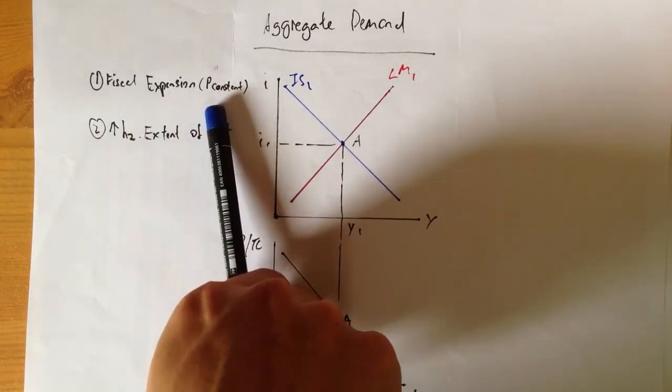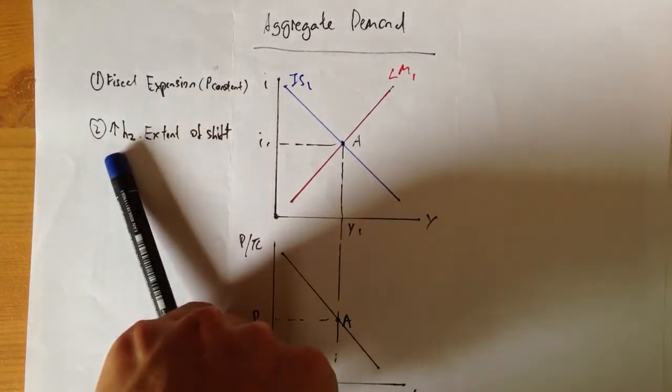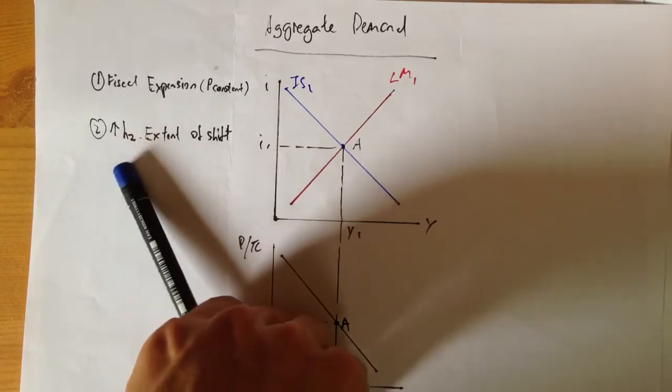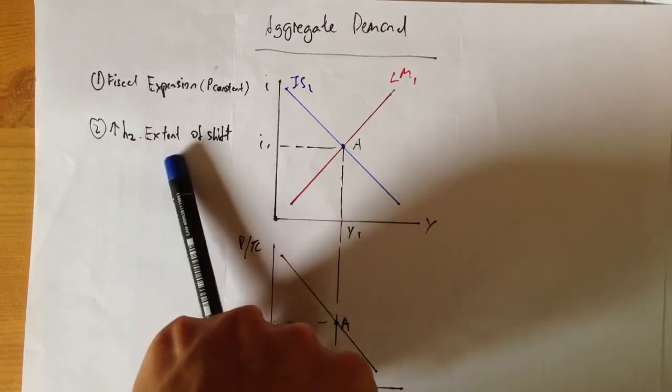And then, the later part, I'm going to talk about how increase in H2, which is the slope of your ISRM, H1 over H2, how increase in H2 can affect the extent of your AD shift.